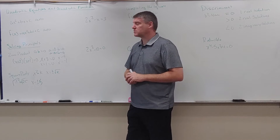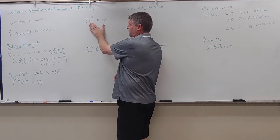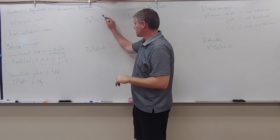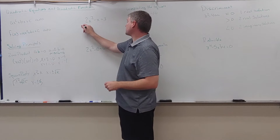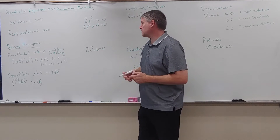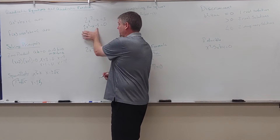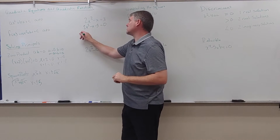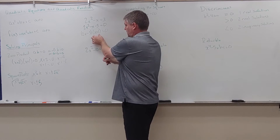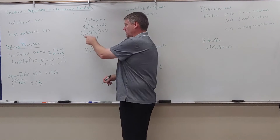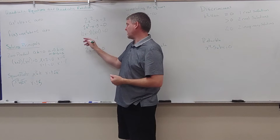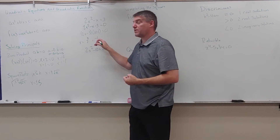Here are a couple of examples. On the first one, I have an x squared and an x — a quadratic component, a linear component, and a constant. I get this side equal to zero: 2x squared minus x minus 3 equals zero. I factor that into 2x minus 3 times x plus 1 equals zero. What makes x plus 1 equal zero is negative 1. For the other factor, opposite side and divide: positive 3 divided by 2 is 3 halves. So x equals 3 halves or negative 1.